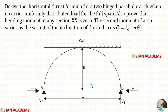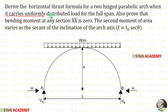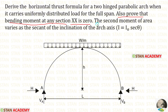Hello everyone. Today we are going to derive a formula for the horizontal thrust of a two-hinged parabolic arch. The question is: derive the horizontal thrust formula for a two-hinged parabolic arch when it carries uniformly distributed load for the full span. Also prove that the bending moment at any section XX is zero, given that the second moment of area varies as the secant of the inclination of the arch axis.